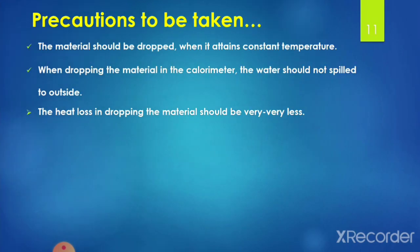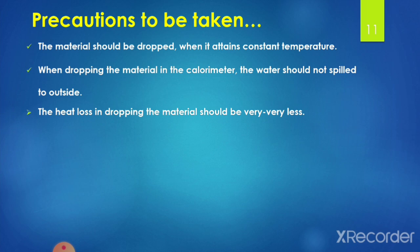While measuring the specific heat of a given agricultural produce, some precautions must be taken. First, the material should be dropped quickly when it attains constant temperature, to avoid heat loss to the surroundings. Second, when dropping the material into the calorimeter cup, the water should not be spilled outside. Third, the heat loss during dropping of the material should be very minimal or negligible.